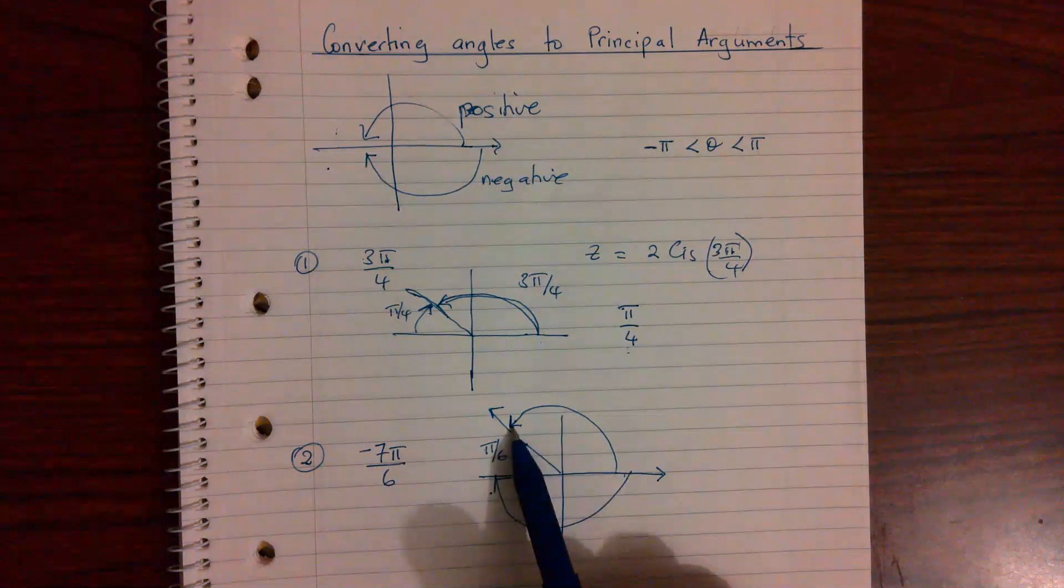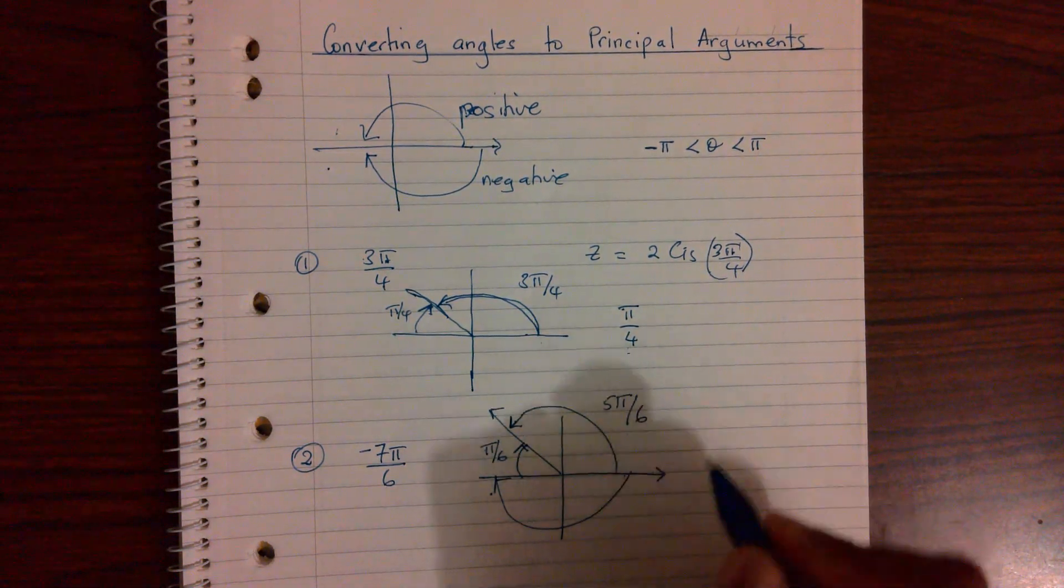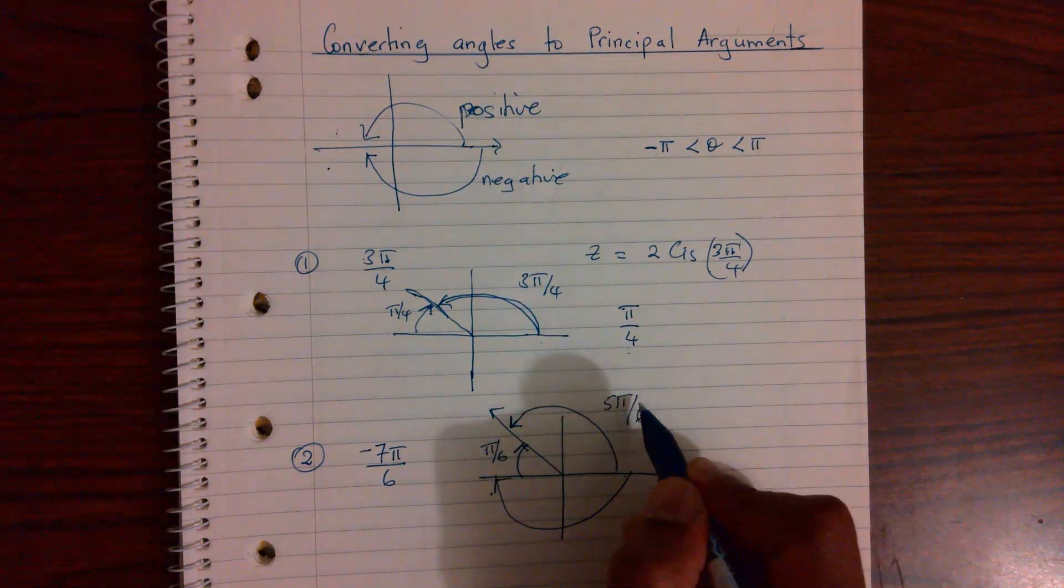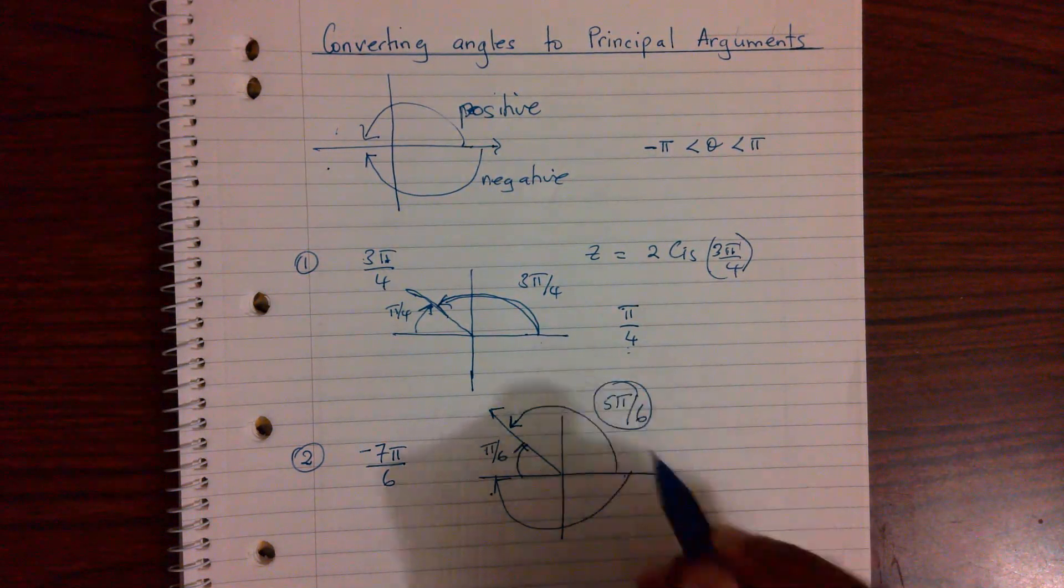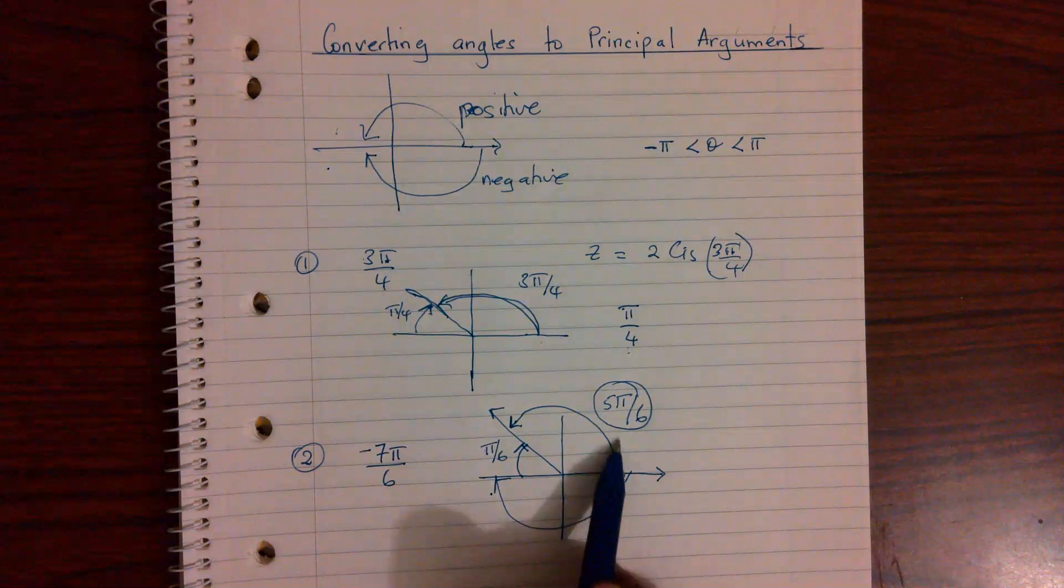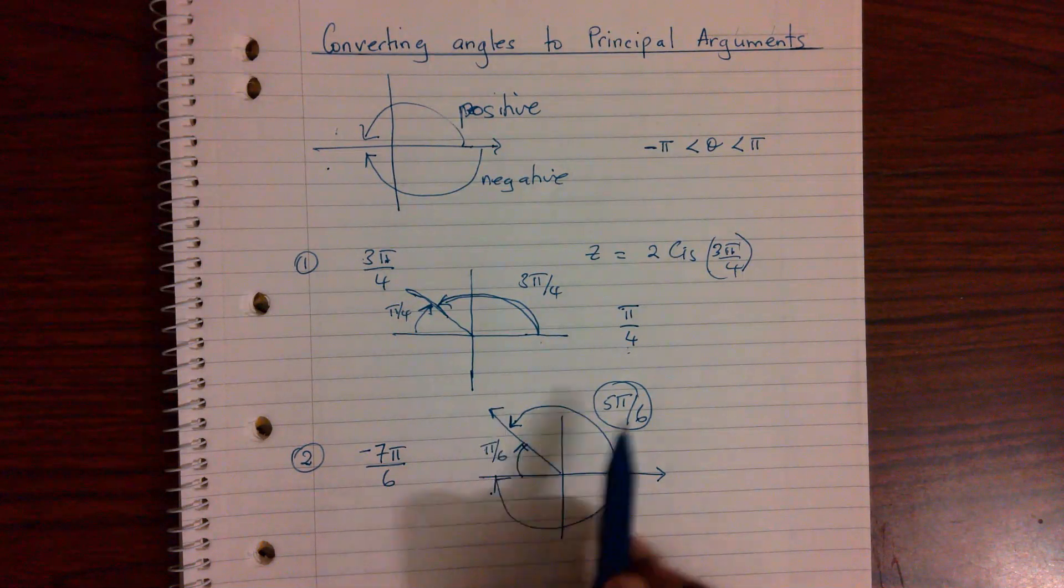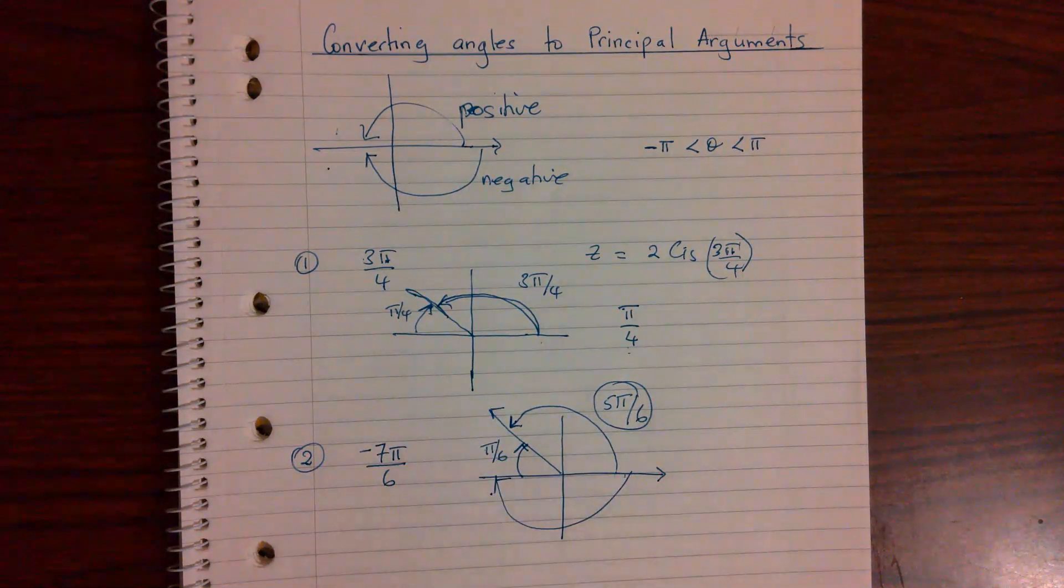If that is 1 piece, that should be about 5. So 5π over 6. And notice I've written it as a positive angle, because it is measured anti-clockwise. So this whole notion of thinking in terms of cutting it into pieces, and then visualizing where this is, seems to be a little bit easier.